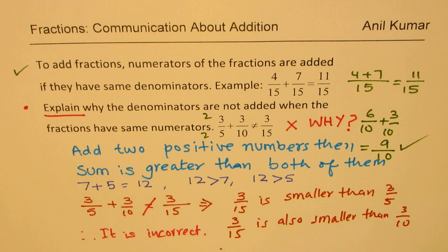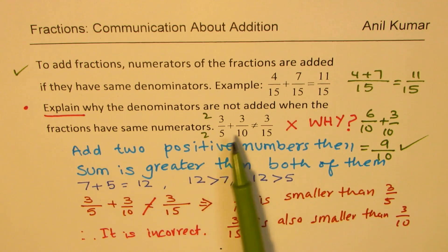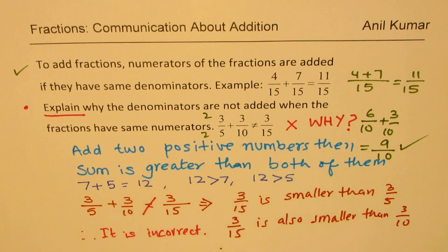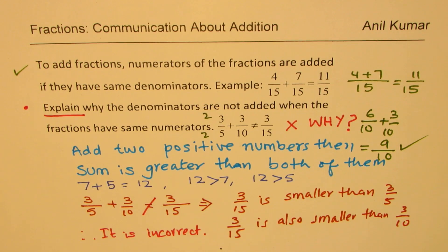I hope you find it interesting and I hope you have also understood why denominators are never added. When you add denominators, you will get a much smaller number which will be wrong. I hope you understand and appreciate this concept. Feel free to write your comment, share your view. And if you like and subscribe to my videos, that would be great. Thanks for watching and all the best.